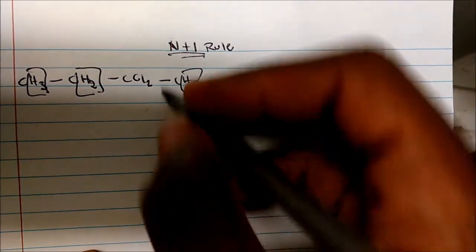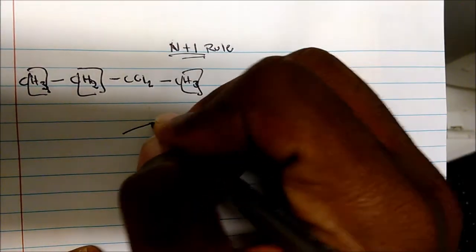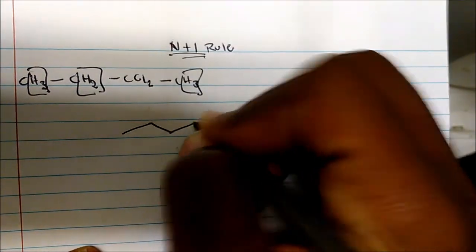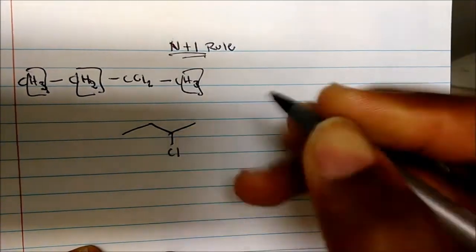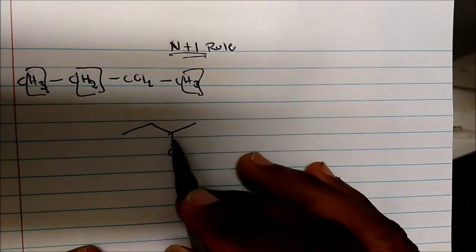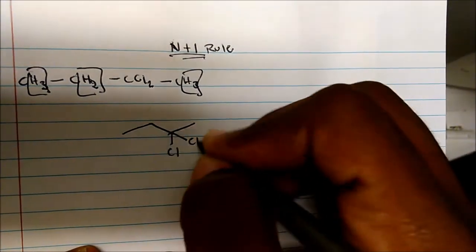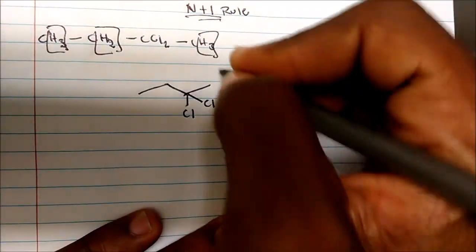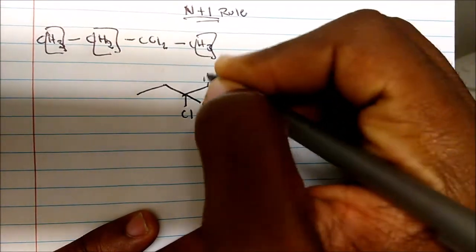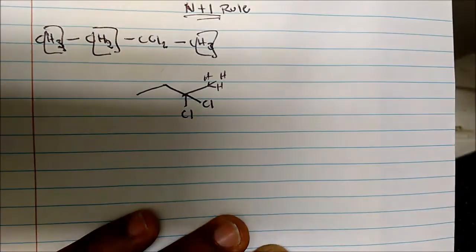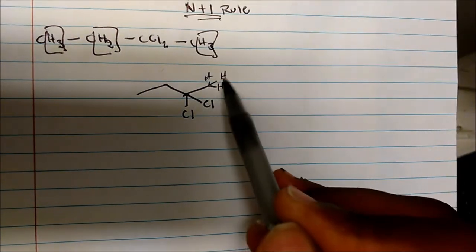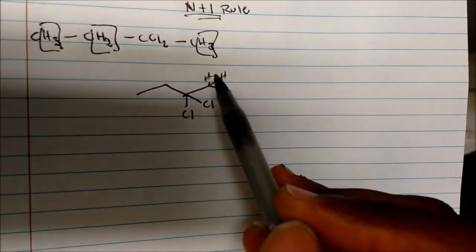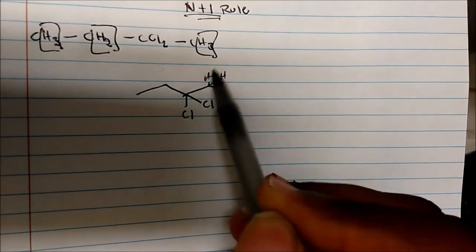The first thing I'm going to do is just convert this to a bond line structure. I have a chlorine here, a CH3, a CH2, a chlorine here — so I have two chlorines and a CH3. Now if we want to predict the splitting pattern of all these hydrogens, remember these hydrogens will count as one — the integration is three.